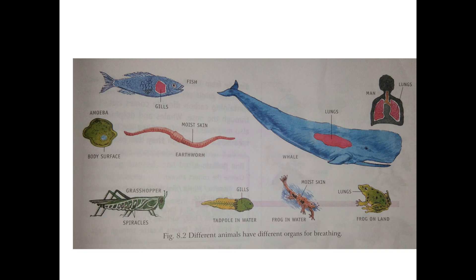Tadpole is a baby frog. Like fishes, tadpoles also breathe through gills. In the case of birds, reptiles, and mammals, they all have lungs as their breathing organs. Humans also fall in the mammals group and breathe through lungs. Whales and dolphins are aquatic mammals and they also have lungs as their breathing organs.